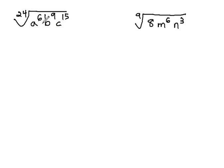For example, in this first example, the 24th root of a to the 6th, b to the 9th, c to the 15th, we see that all these values, if we thought of them as fractions, can be divided by 3.